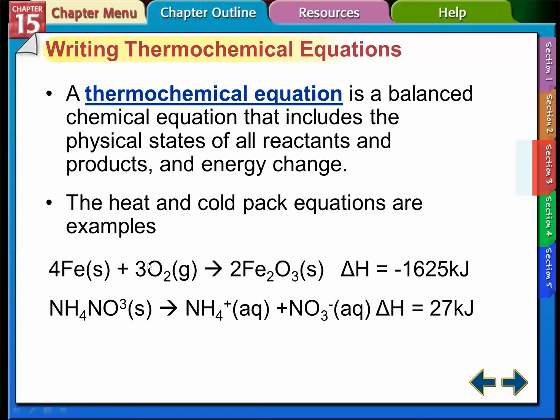The first one we have is the heat pack and the second one is the cold pack. The heat pack is iron and oxygen combine to form iron oxide and it releases 1625 kilojoules of heat. It has all the states - solid, gas, makes a solid - and how much heat is released. Same thing for the ammonium nitrate reaction. 27 kilojoules of heat is absorbed.